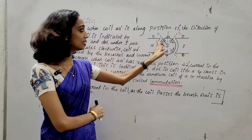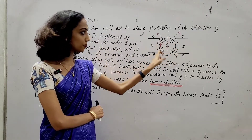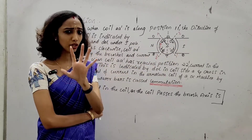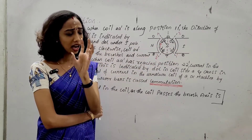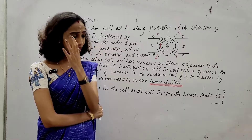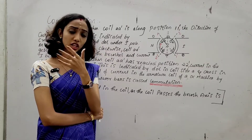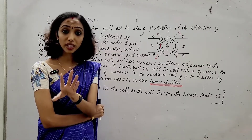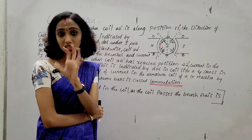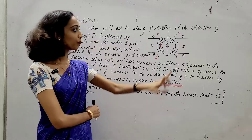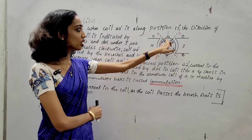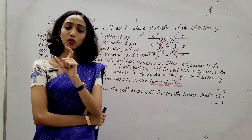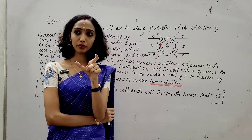This is the armature and these are the commutator segments. Armature coils or armature conductors are connected to the commutator segments. This is the armature with one portion.